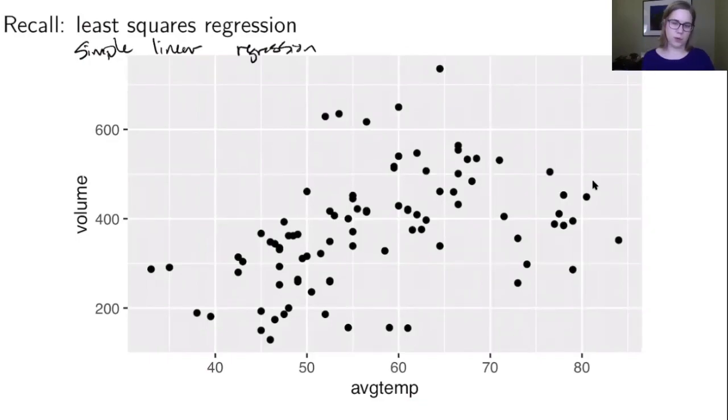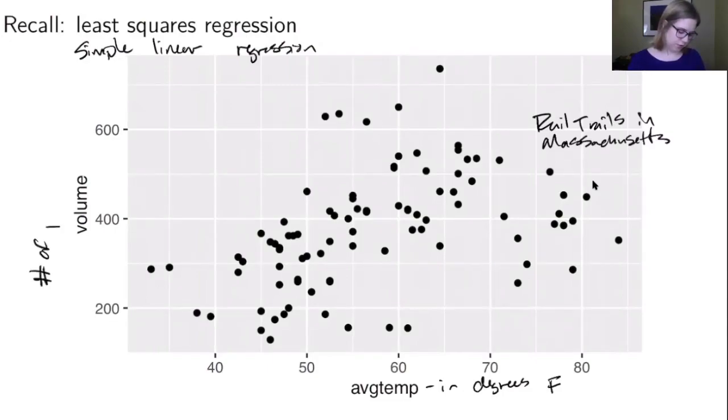I had this example that we were talking about, which was data from rail trails in Massachusetts. It was about the average temperature in degrees Fahrenheit against the volume, which was the number of people on the rail trail.